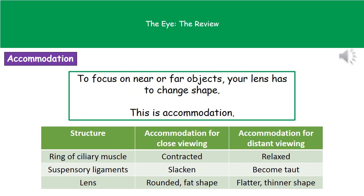To focus on near or far objects, the eye has to undergo a change in the shape of the lens — a process called accommodation. Three things are involved: the ciliary muscle, the suspensory ligaments, and the lens. When viewing something up close, the ciliary muscle contracts, the suspensory ligaments slacken, and the lens becomes more rounded and fatter. When viewing something far away, the opposites occur: the ciliary muscle relaxes, the suspensory ligaments become taut, and the lens becomes flatter and thinner.